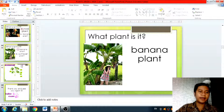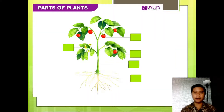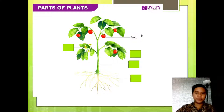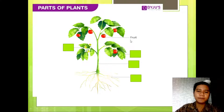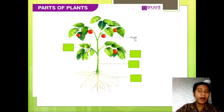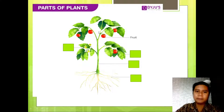Let's try to answer the parts of the plant. Are you ready? The first one — what part of the plant is this? It's fruit. Can you spell fruit? F-R-U-I-T. Fruit. Remember that — this part of the plant is what we call fruit.